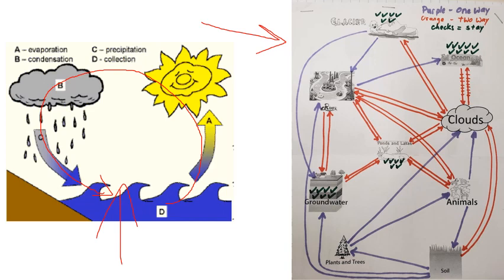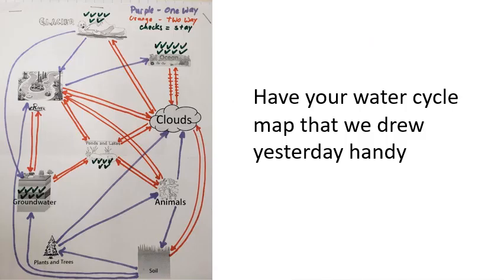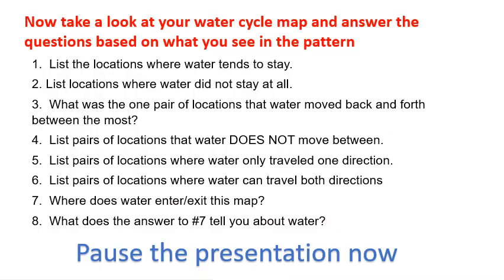The first thing I need you to do is copy these questions into your notebook — we're going to answer them as we go through the conclusions. Leave enough space for each answer. Look at that water cycle map and answer the questions based on what you see in the pattern. Write them in pencil in case you get them wrong. Pause the presentation now, read through the questions, look at the map, and get an idea of what you think the answers are.